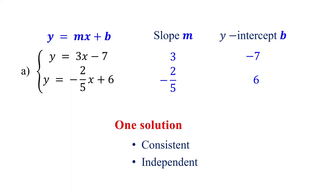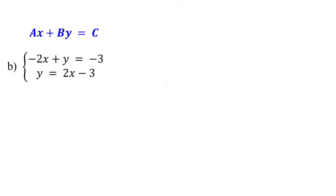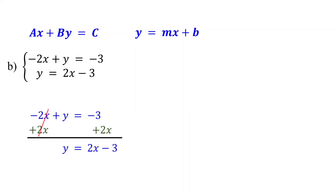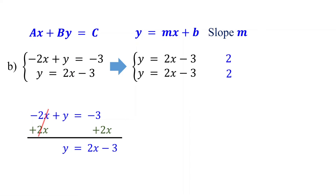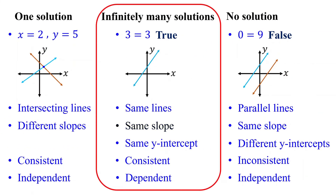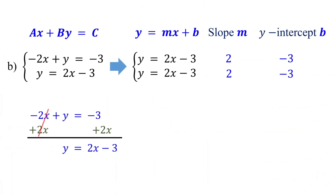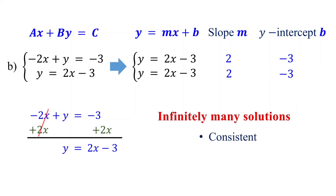In the next example, the first equation is in standard form, so rewrite it in slope-intercept form by adding 2x to both sides, giving y equals 2x minus 3. Now both equations are in slope-intercept form and are identical — same slope and same y-intercept. When equations have the same slope and y-intercept, the system has infinitely many solutions and is consistent and dependent.